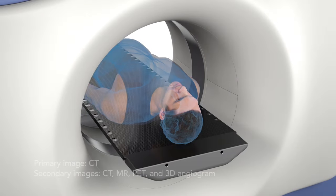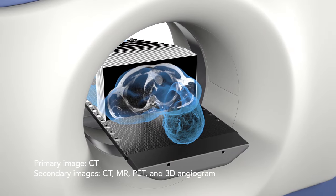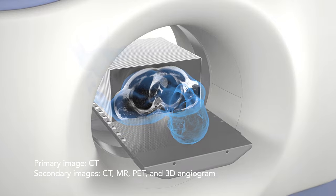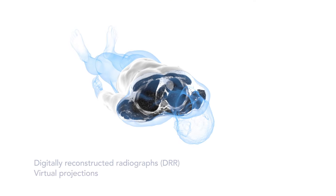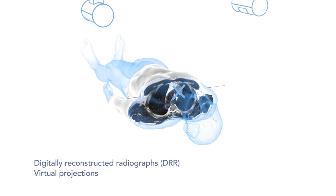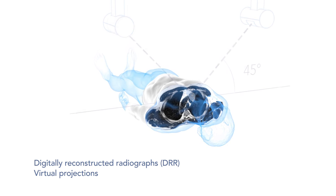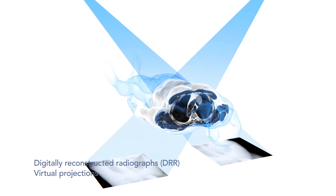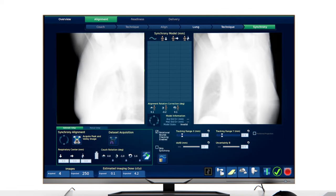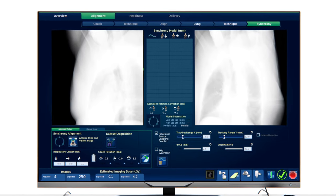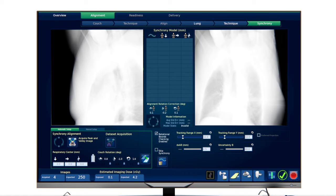The patient workflow starts with a CT acquisition, the primary image for treatment planning. Digitally reconstructed radiographs are then generated by the CyberKnife system — virtual projections at a 45-degree angle perpendicular to the patient couch. Transferred to the treatment delivery software, they are later used as references for pre-treatment patient positioning and real-time motion tracking and correction.